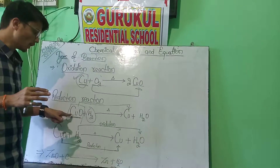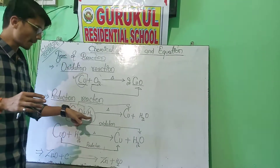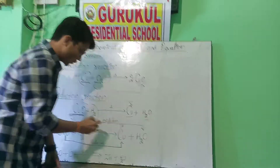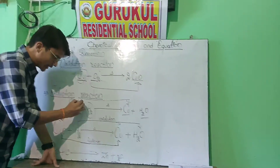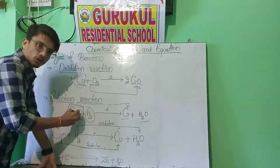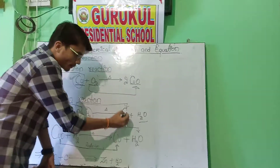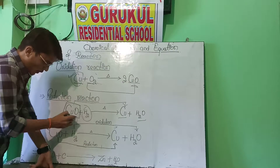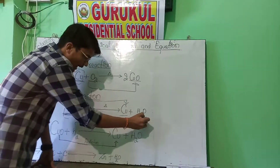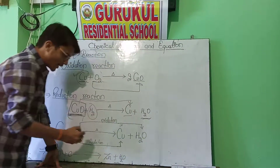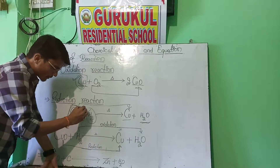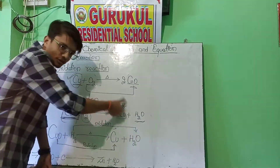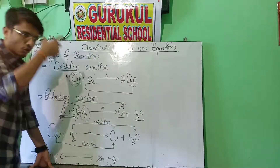Here I am taking an example. When copper oxide combines with hydrogen, it forms copper plus H₂O. In this copper oxide, oxygen is removing from the copper and combining with hydrogen. So we can say that this copper oxide is reducing here in the form of copper.